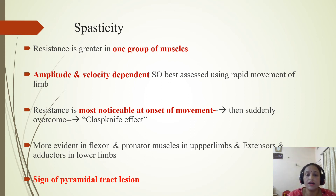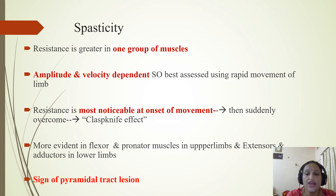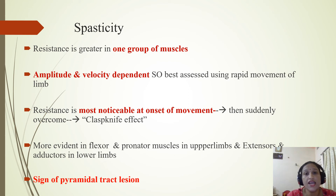In upper limbs, spasticity is more evident in flexor and pronator muscles, while in lower limbs it is more evident in extensors and adductors. A very important thing about spasticity is that it is a sign of pyramidal tract region involvement.